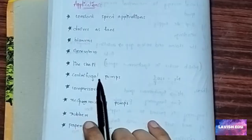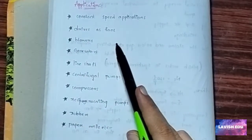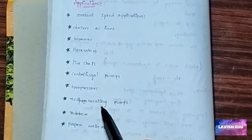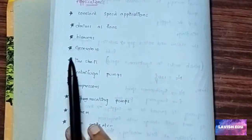Now we will see the main applications of the synchronous generator or constant speed applications: drives such as fans, blowers, generators, line shaft, centrifugal pumps, compressors, reciprocating pumps, rubber and paper mills, etc. These are some of the applications of the synchronous motor.